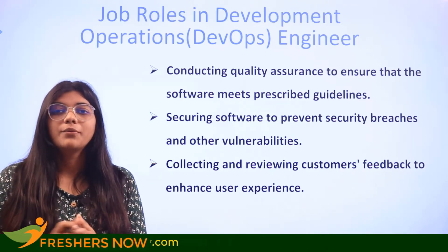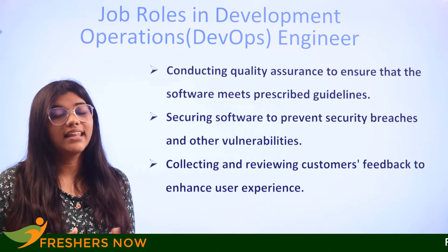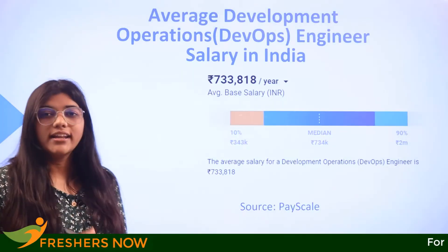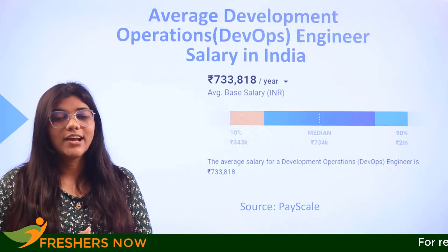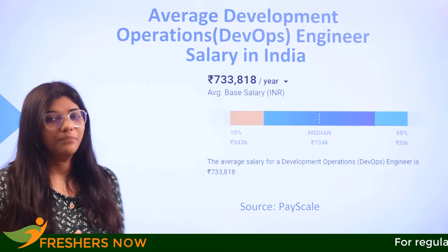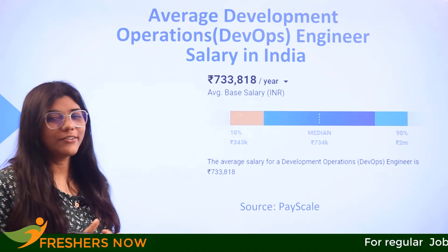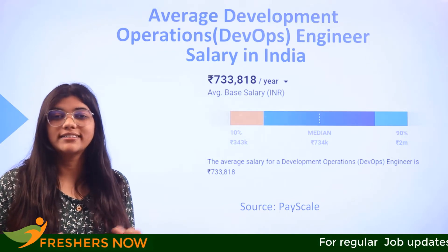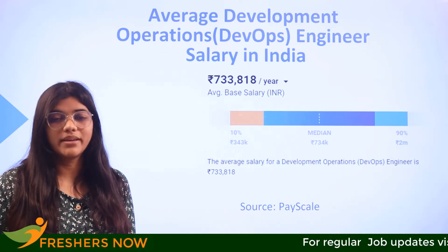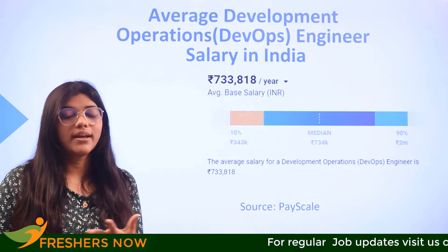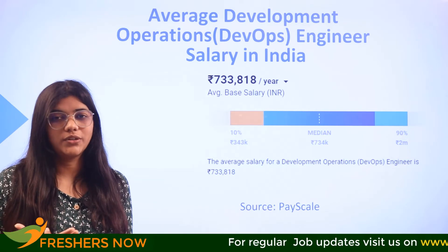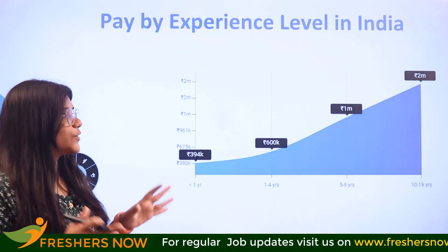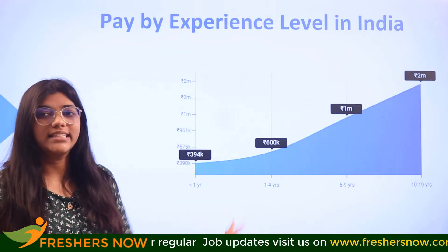Moving on to the salary of a DevOps engineer in India — on an average basis, according to data from PayScale, the average pay is ₹7,33,000 per annum. If you want to know more about salaries, you can always head over to the PayScale website.